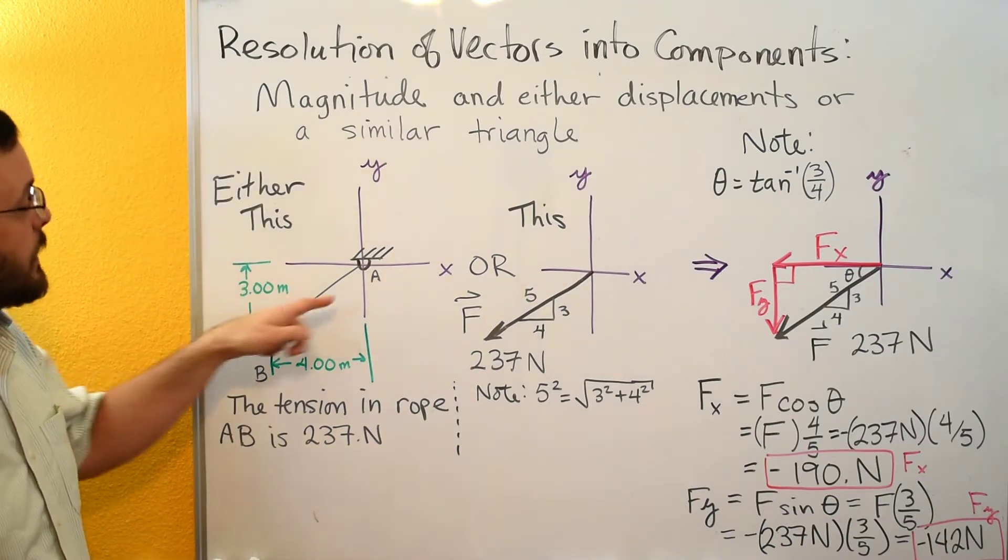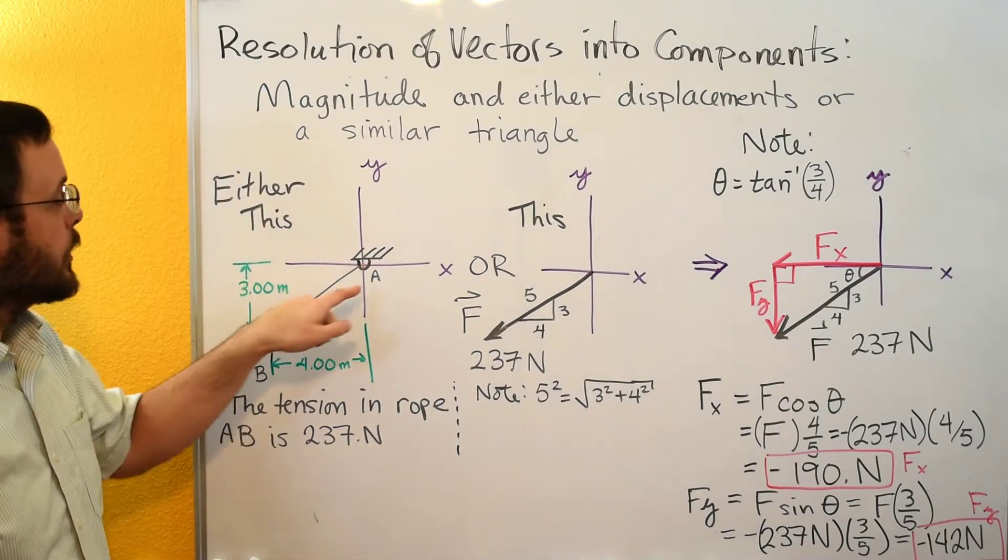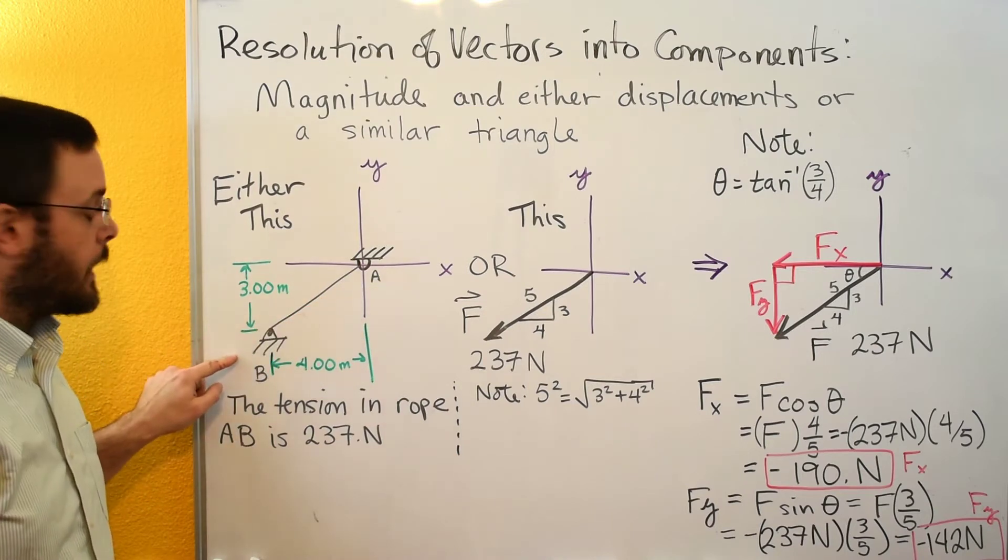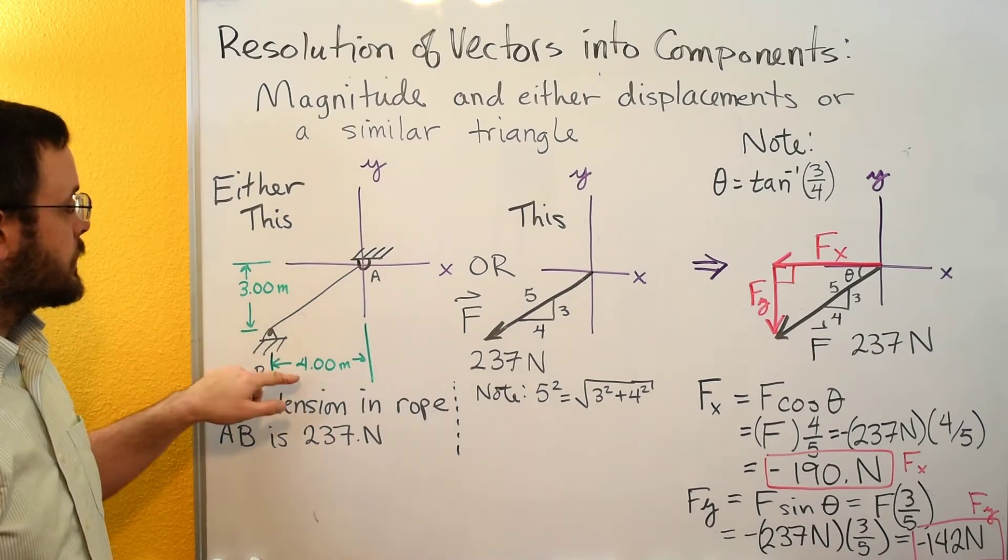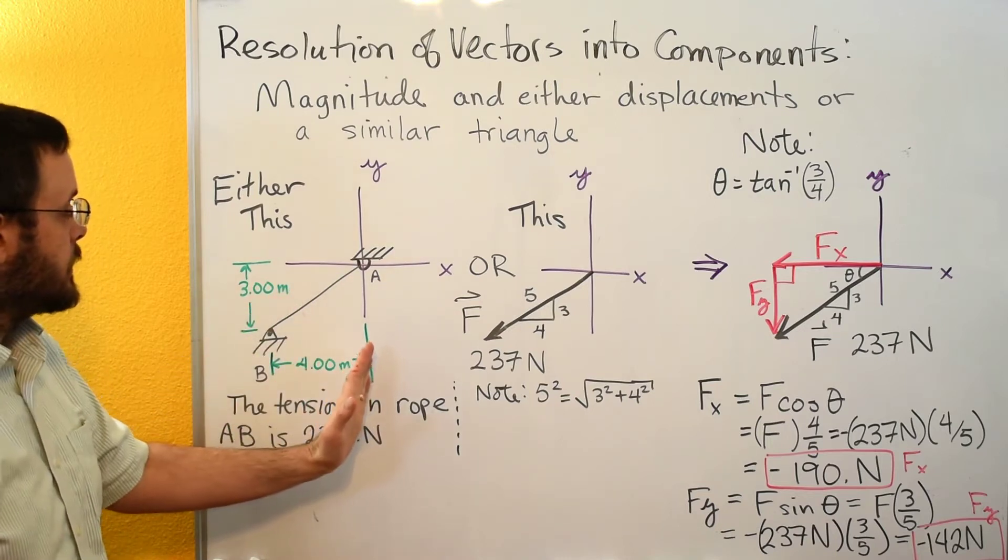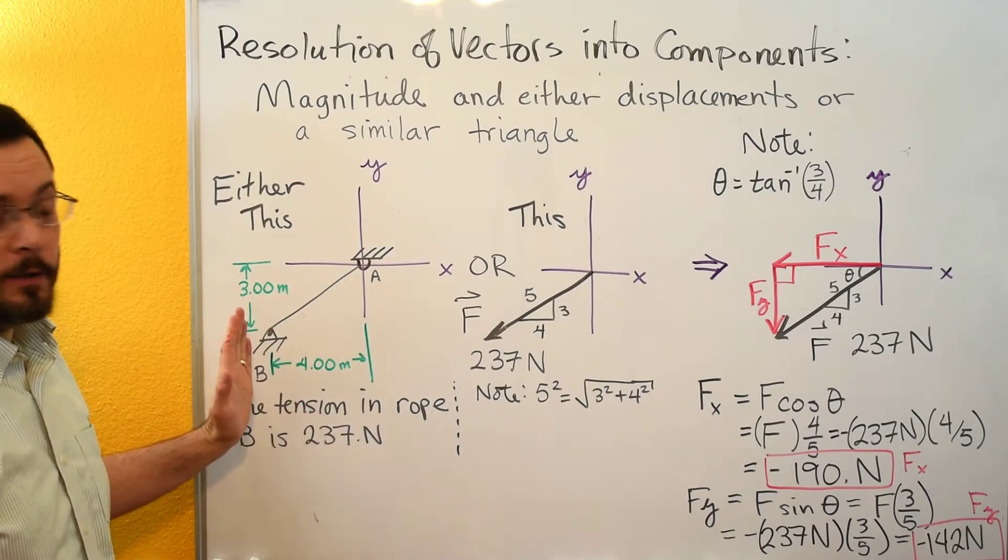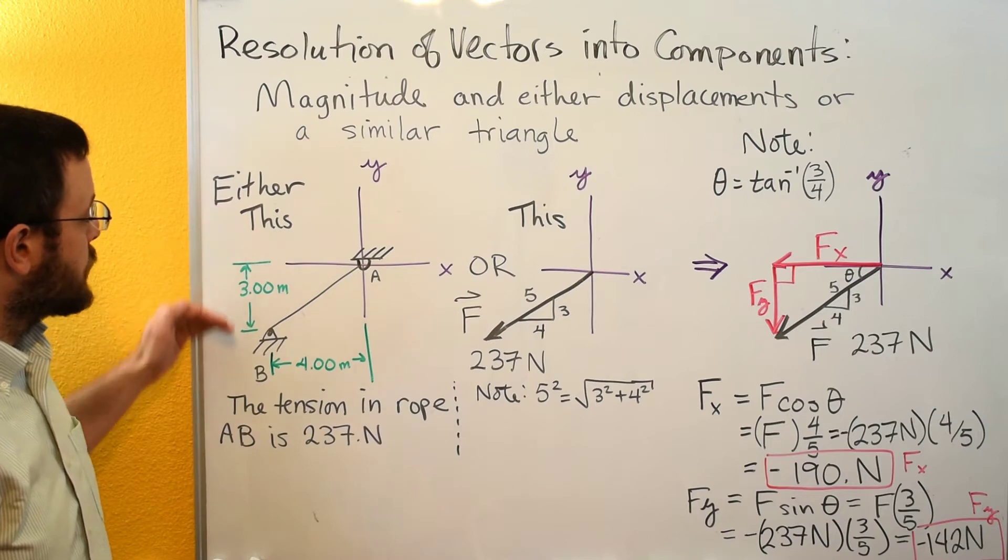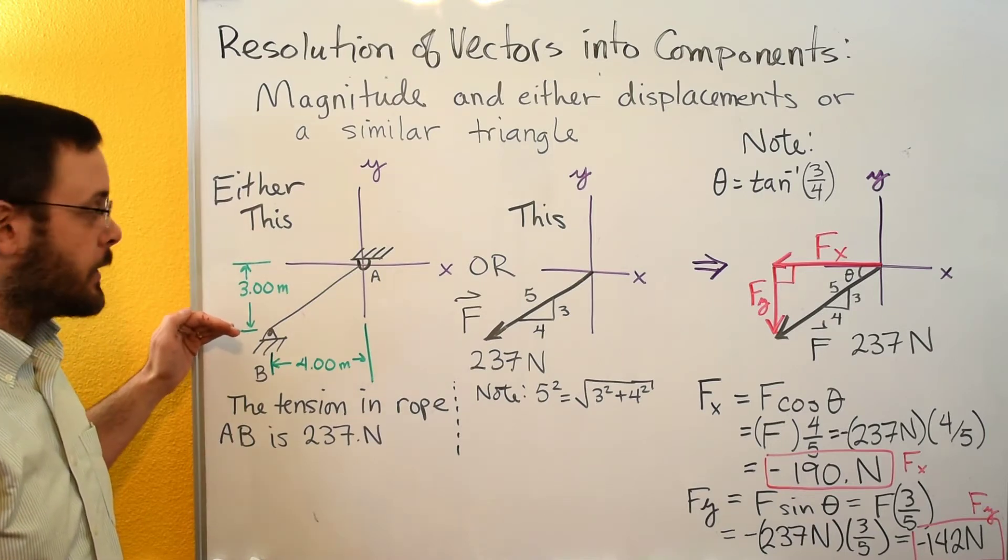So in the first case, you may have just a rope going from, say, point A to point B, and you may have the distances or displacements from A to B. So in this case, B is 4 meters over in the x direction, and B is 3 meters down in the y direction.